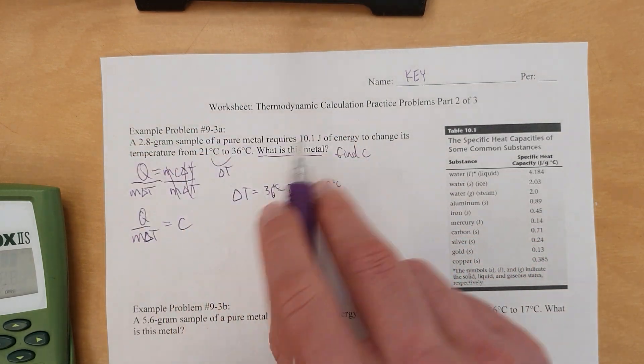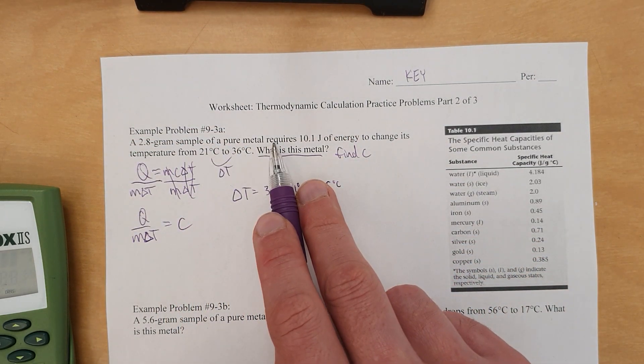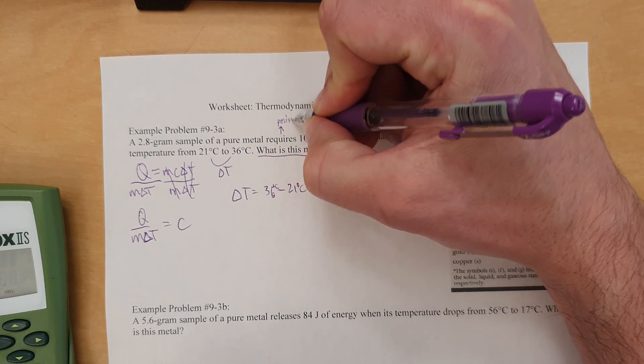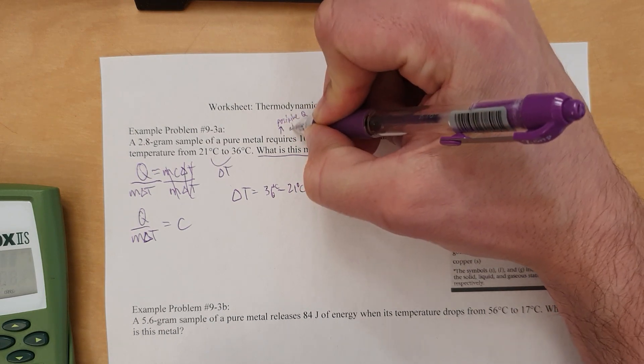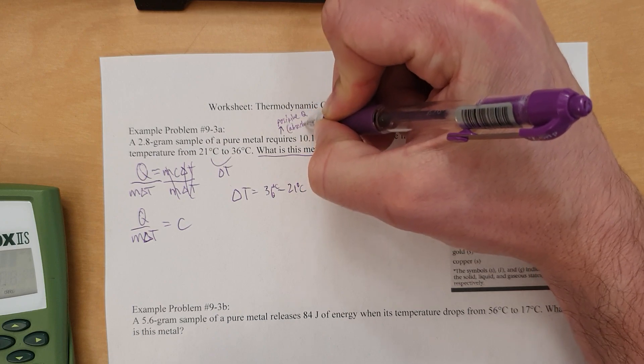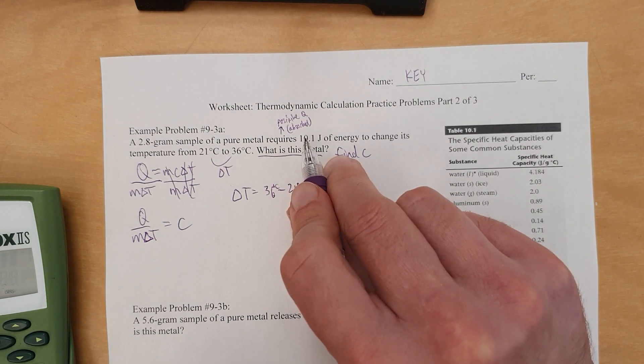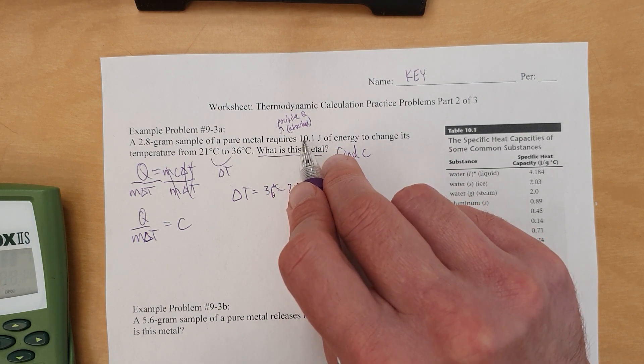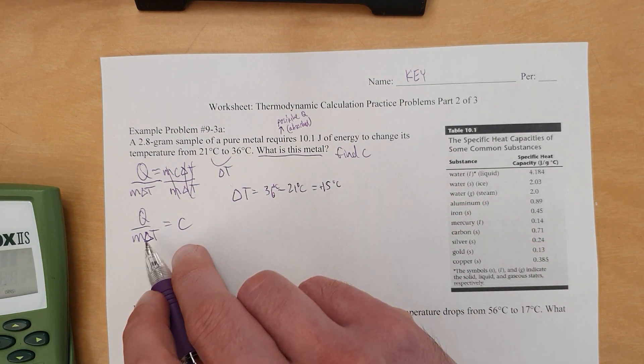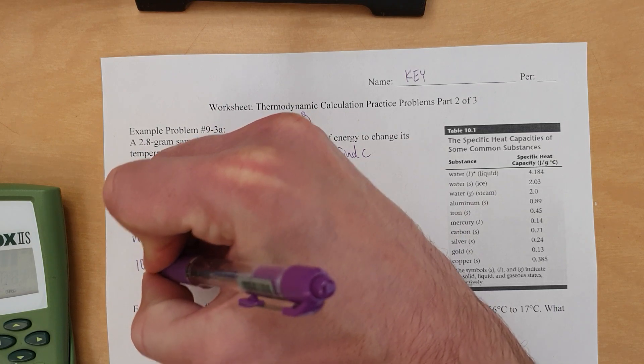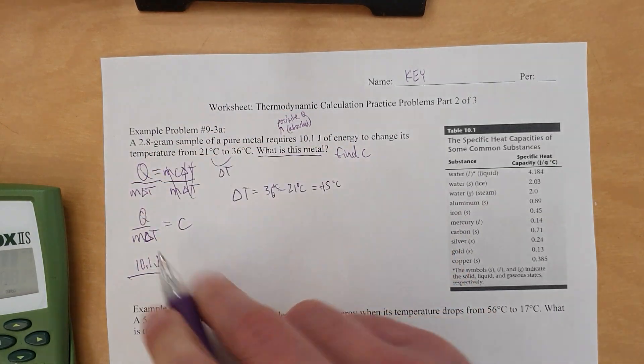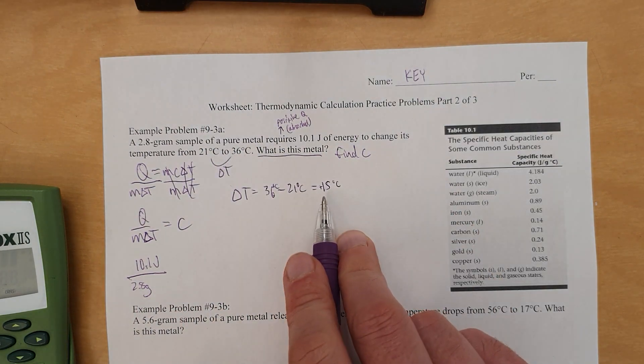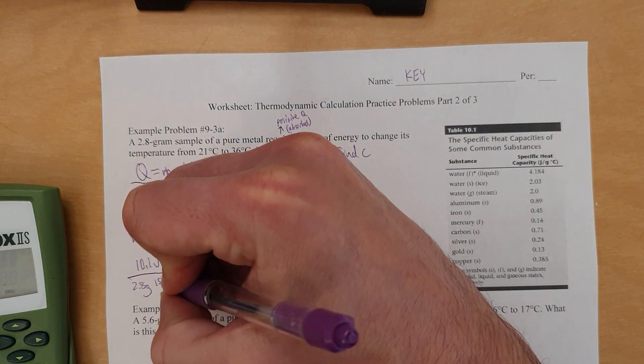So 36 degrees Celsius minus 21 degrees Celsius equals positive 15 degrees Celsius because the temperature went up. So let's plug the numbers in. When something requires something, that means positive Q because it's absorbed. If we said released, you would have put a negative sign on there because it requires, it absorbs, and is therefore positive Q. So Q is positive 10.1 joules. Mass is 2.8 grams, and change in temperature is 15 degrees Celsius.